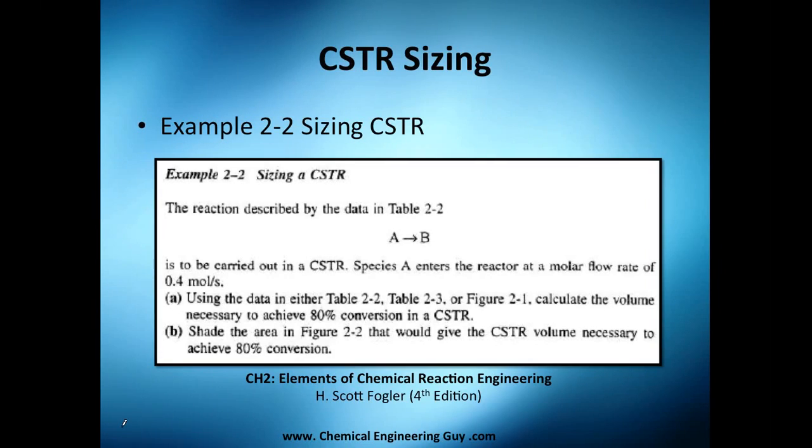So let's do this problem, which is a continuous stirred tank reactor sizing. It's example 2-2 from chapter 2. We're going to size it. Now they describe a reaction A turns into B, and it's going to be carried out in this continuous stirred tank reactor.